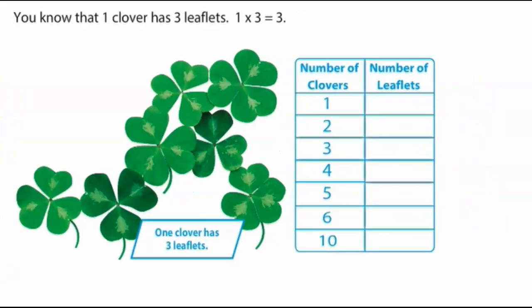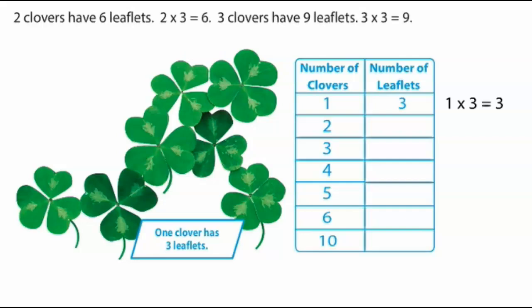You know that one clover has three leaflets. One times three equals three. Two clovers have six leaflets. Two times three equals six. Three clovers have nine leaflets. Three times three equals nine.